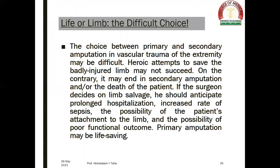The difficult choice between life and the limb: the choice between primary and secondary amputation in vascular trauma of the extremity may be difficult. Heroic attempts to save a badly injured limb may not succeed and may end in secondary amputation and/or the patient's death. If the surgeon decides on limb salvage, he should anticipate prolonged hospitalization, increased risk of sepsis, the patient's emotional attachment to the limb, and the possibility of poor functional outcome. Therefore, primary amputation is sometimes life-saving.